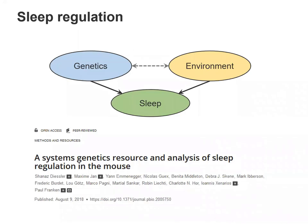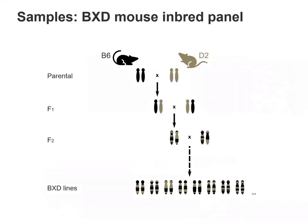In our case, the project aims to better understand the regulation of sleep with its genetic component and in particular the effect of sleep deprivation as an environmental perturbation. This work was done in the BXD mouse panel, which is made from two parental strains — Black6 and D2 — which are commonly used by many labs and have different phenotypes, including their sleep behavior. These strains were crossed and then inbred for many generations to fix the genotypes, so the BXD lines are each a different mixture between the parental strains.